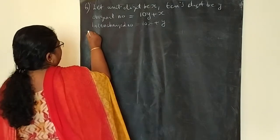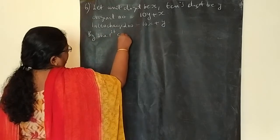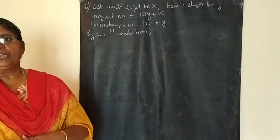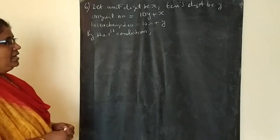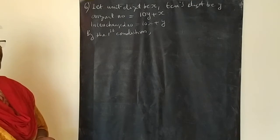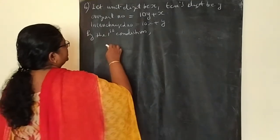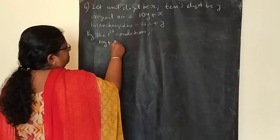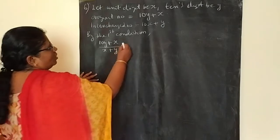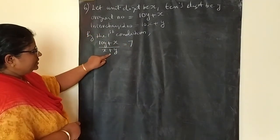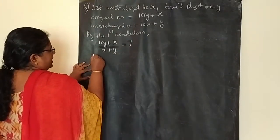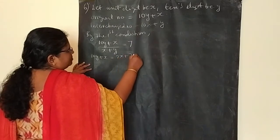Now, you have to form the equation using both conditions. By the first condition: if the number is divided by the sum of the digits, the quotient is 7. The sum of the digits is X plus Y. So, if we divide the number by X plus Y, we get 7. We can cross multiply and write: 10Y plus X is equal to 7X plus 7Y.